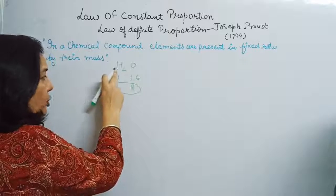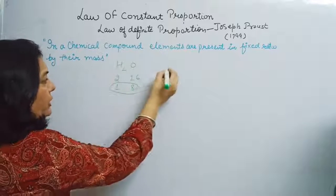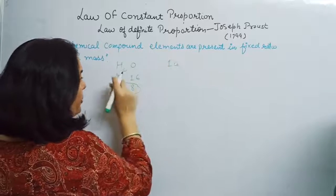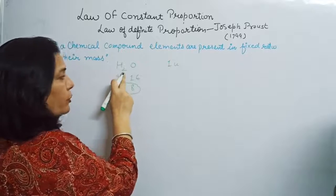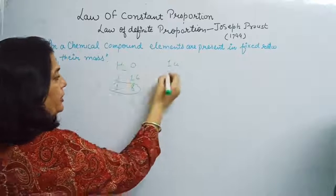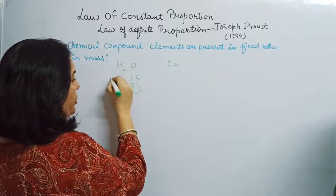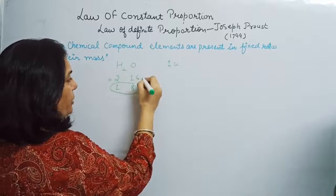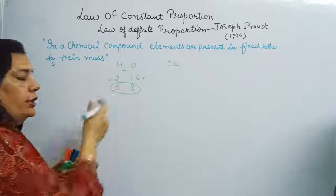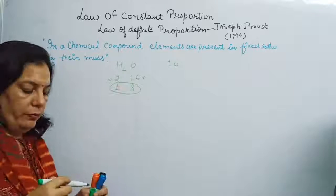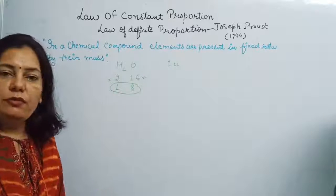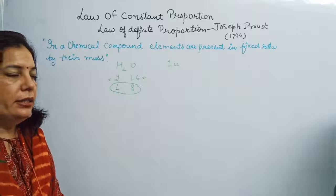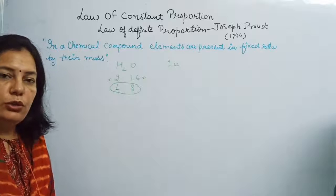The atomic mass of hydrogen is 1 unit. Because 2 atoms of hydrogen are present, it is taken as 2 units. Oxygen's atomic mass is 16 units. The ratio is 1:8, which is a very simple and fixed ratio.